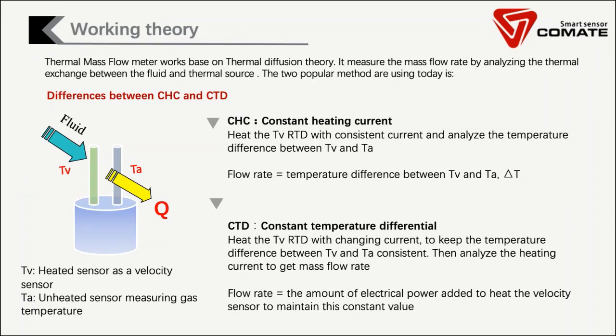Why can CMOS mass flow meters measure the mass flow directly? Let's go back to the working theory of the CMOS flow meter. Based on the thermal diffusion method, flow rate is determined by analyzing the heat exchange between the flow field and the heat source. CMOS flow meters have two sensors: one is a heated sensor as a velocity sensor, which we call TV here; and one is an unheated sensor to measure gas temperature.